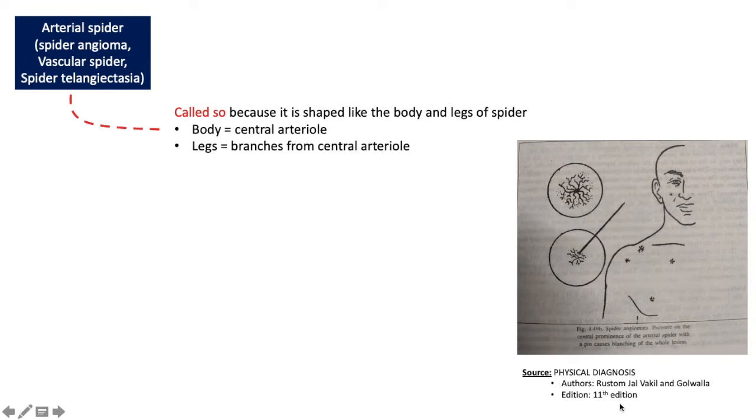As shown in the picture, when the spider angioma is pressed in the center over the central artery and released, you can see the blood filling from center to periphery. The common sites are neck, face, arms, and upper trunk, that is SVC territory.